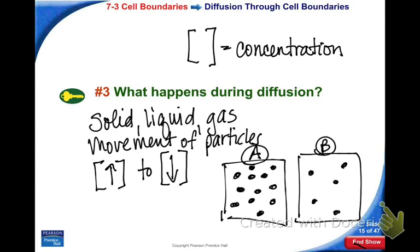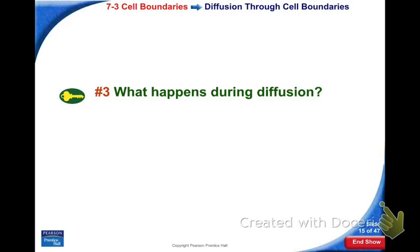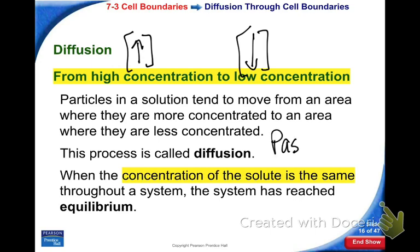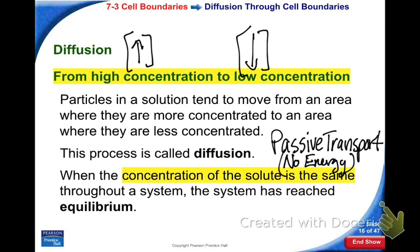They distribute until we get to equilibrium. Diffusion again occurs from a high concentration to a low concentration because it doesn't take any added energy for this to happen. This is a passive transport process. Because particles are constantly moving, they are going to distribute themselves and spread out as much as possible. This does not require energy — no energy is needed to make it happen.